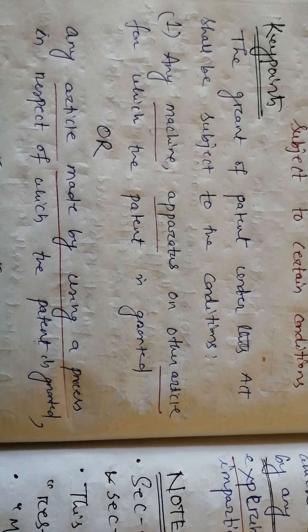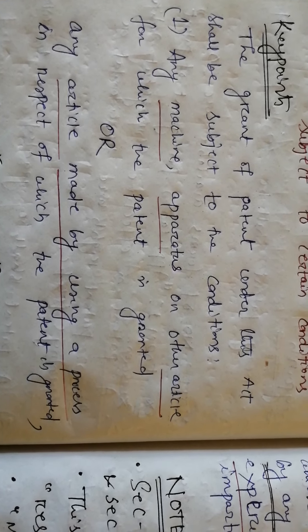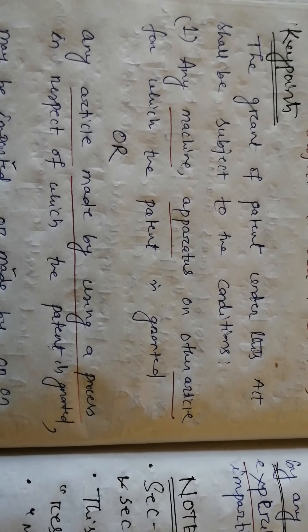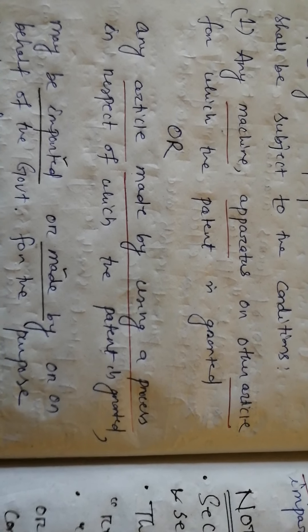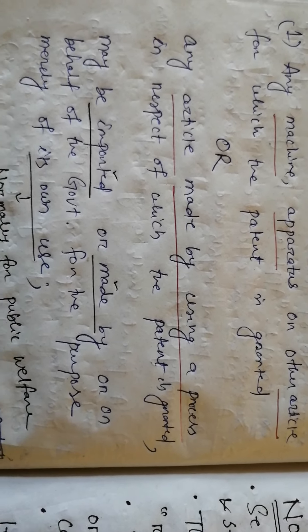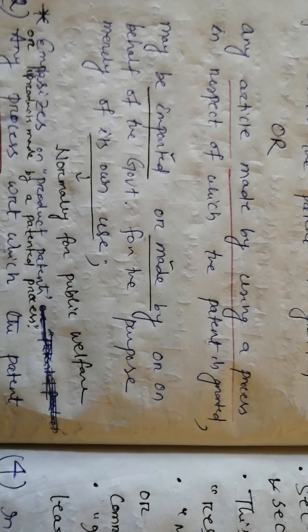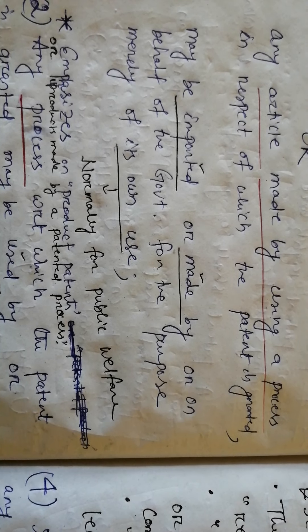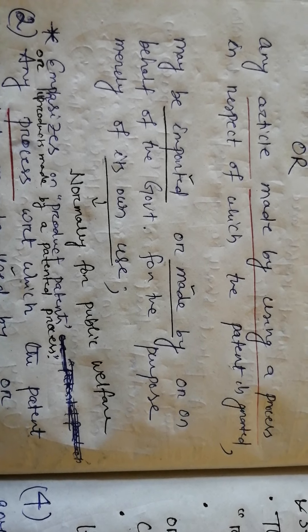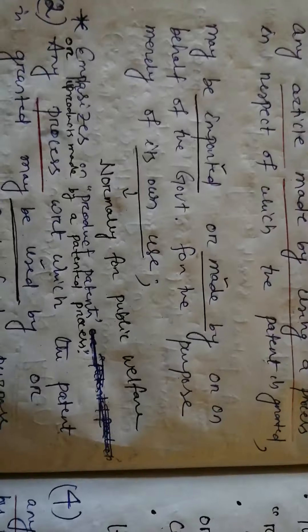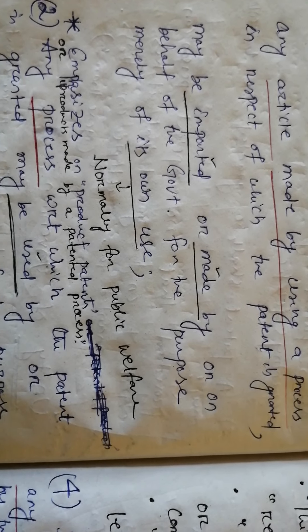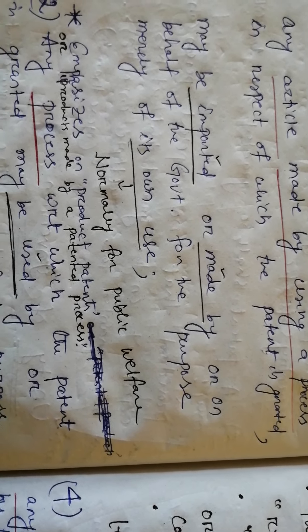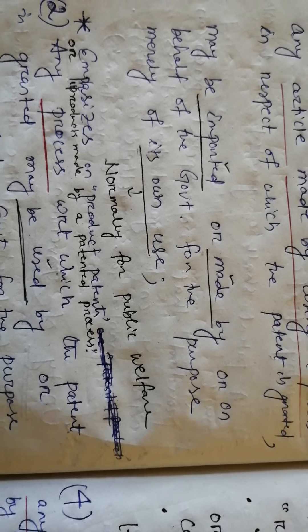The key point is that the grant of a patent under this act shall be subject to certain conditions given under the subsections. Subsection 1 states: any machine, apparatus or other article for which the patent is granted, or any article made by using a process in respect of which the patent is granted, may be imported or made by or on behalf of the government for the purpose merely of its own use. This means product patents or process patents may be imported or made by or on behalf of the government — meaning the departments under government — for the purpose merely of its own use.